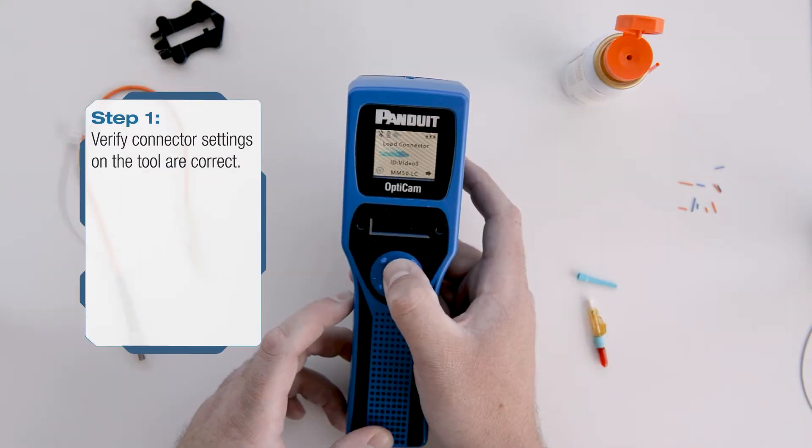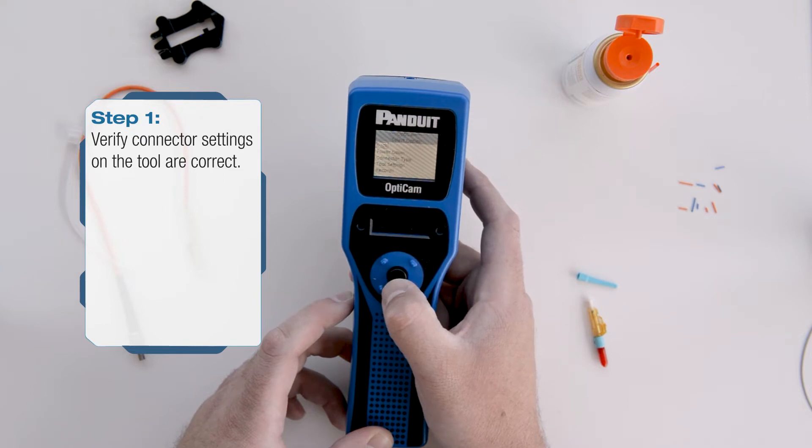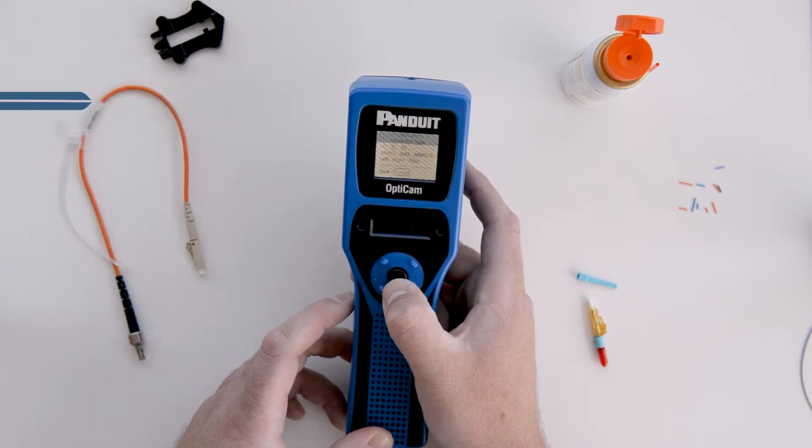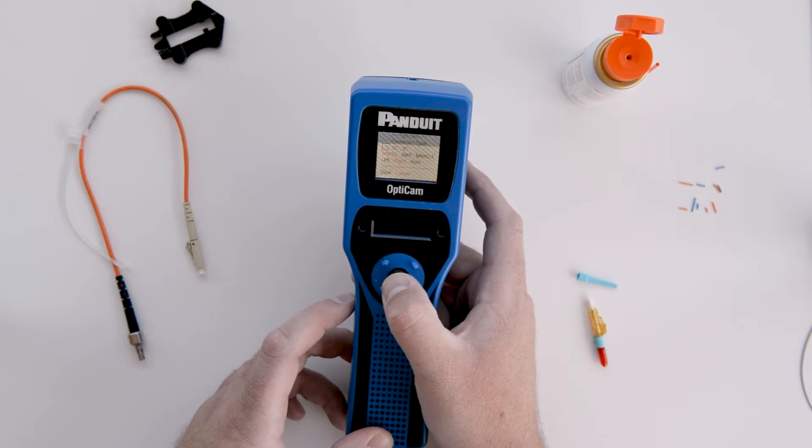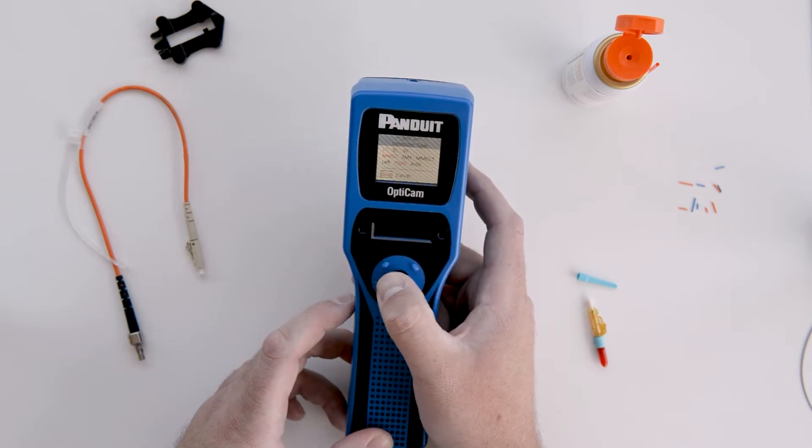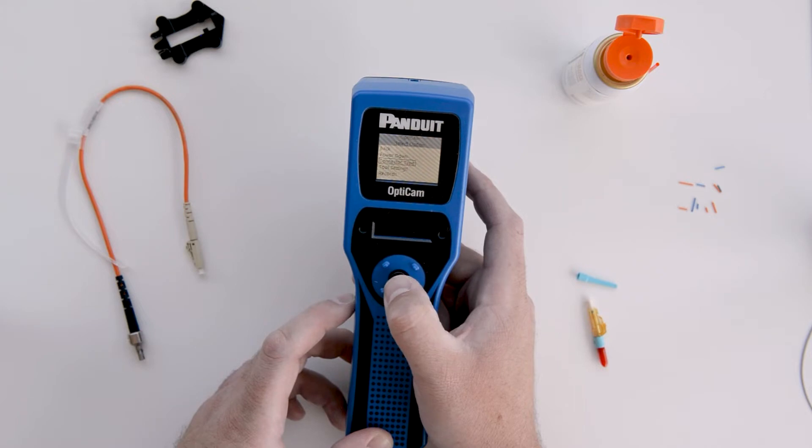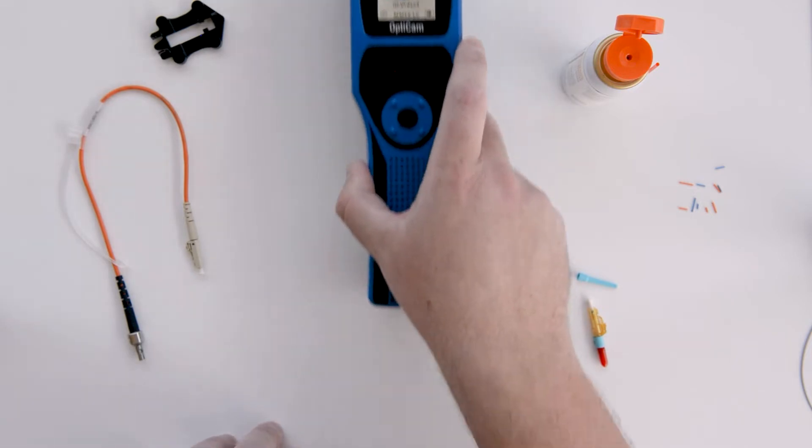First, check to make sure the settings on the tool match the type of connector setup you are about to do. In this example, the LC, MM50, and WRITE settings are highlighted in red to indicate a 50-micron multi-mode LC connector using a right-handed setup. Click the save icon.